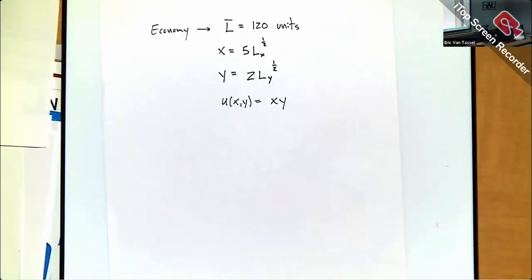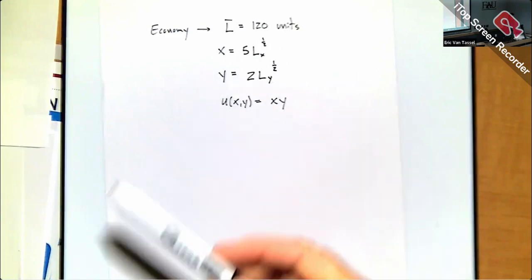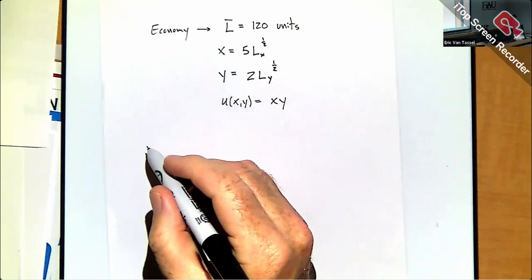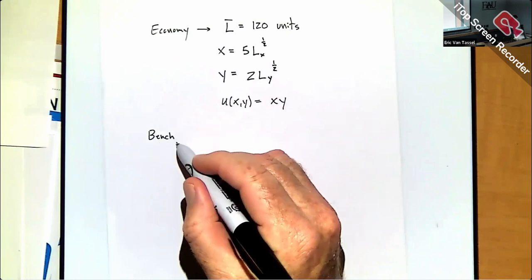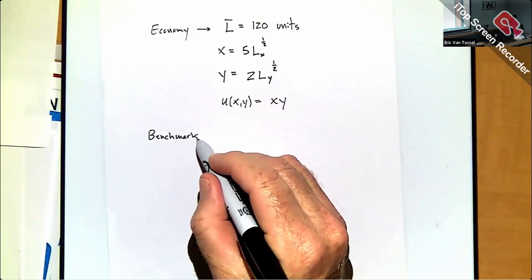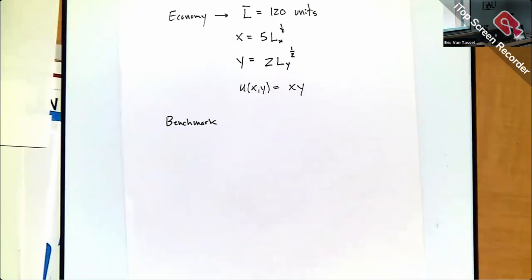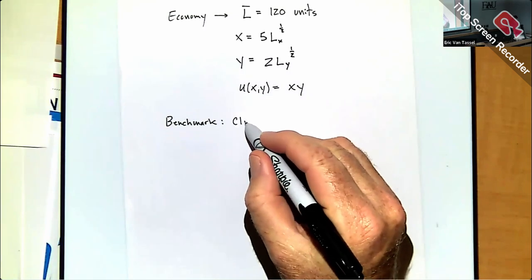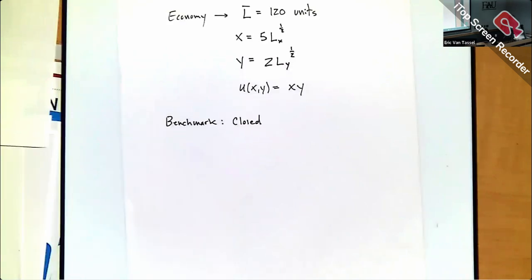What's different from last time is that the economy participates in international markets where they can trade goods X and Y. Before doing that, let's establish a benchmark by solving the closed economy to see where the economy winds up, then do the open economy and compare the two.